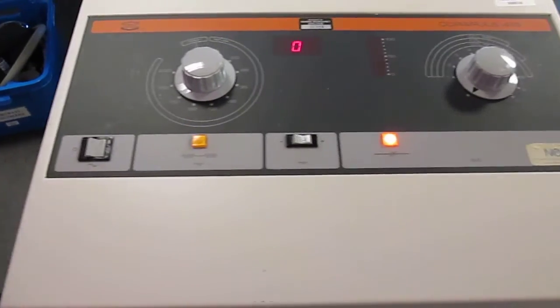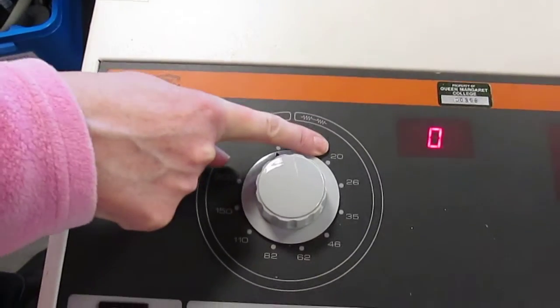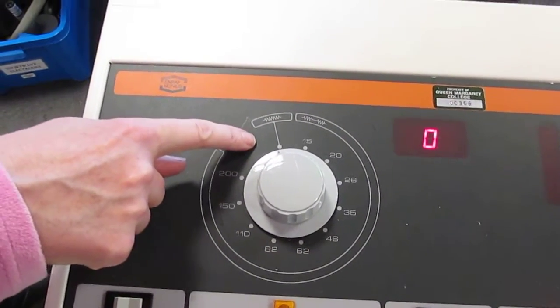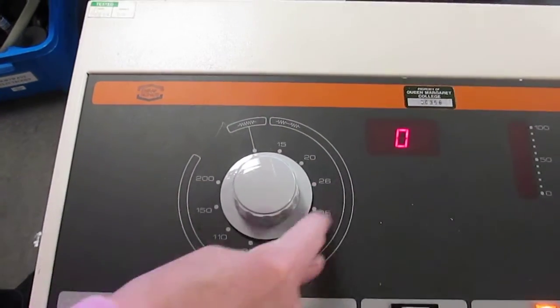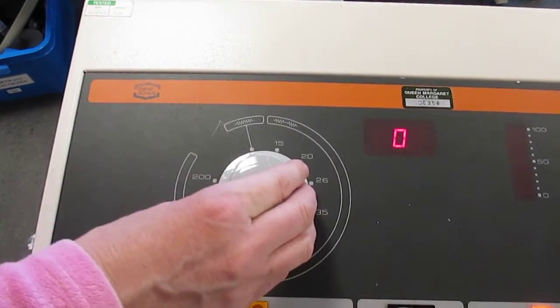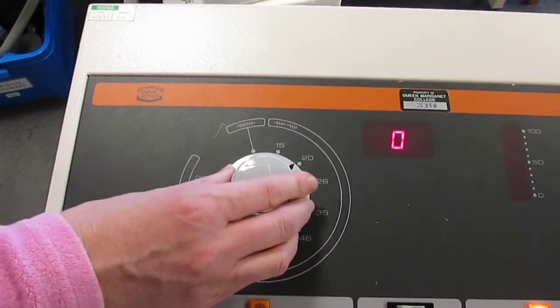You then want to choose whether you're going to use continuous mode or pulsed. This is known as the pulse repetition rate, these numbers here. This dial is pointing to continuous, but I can change it to pulsed and choose my rate by turning the dial clockwise.